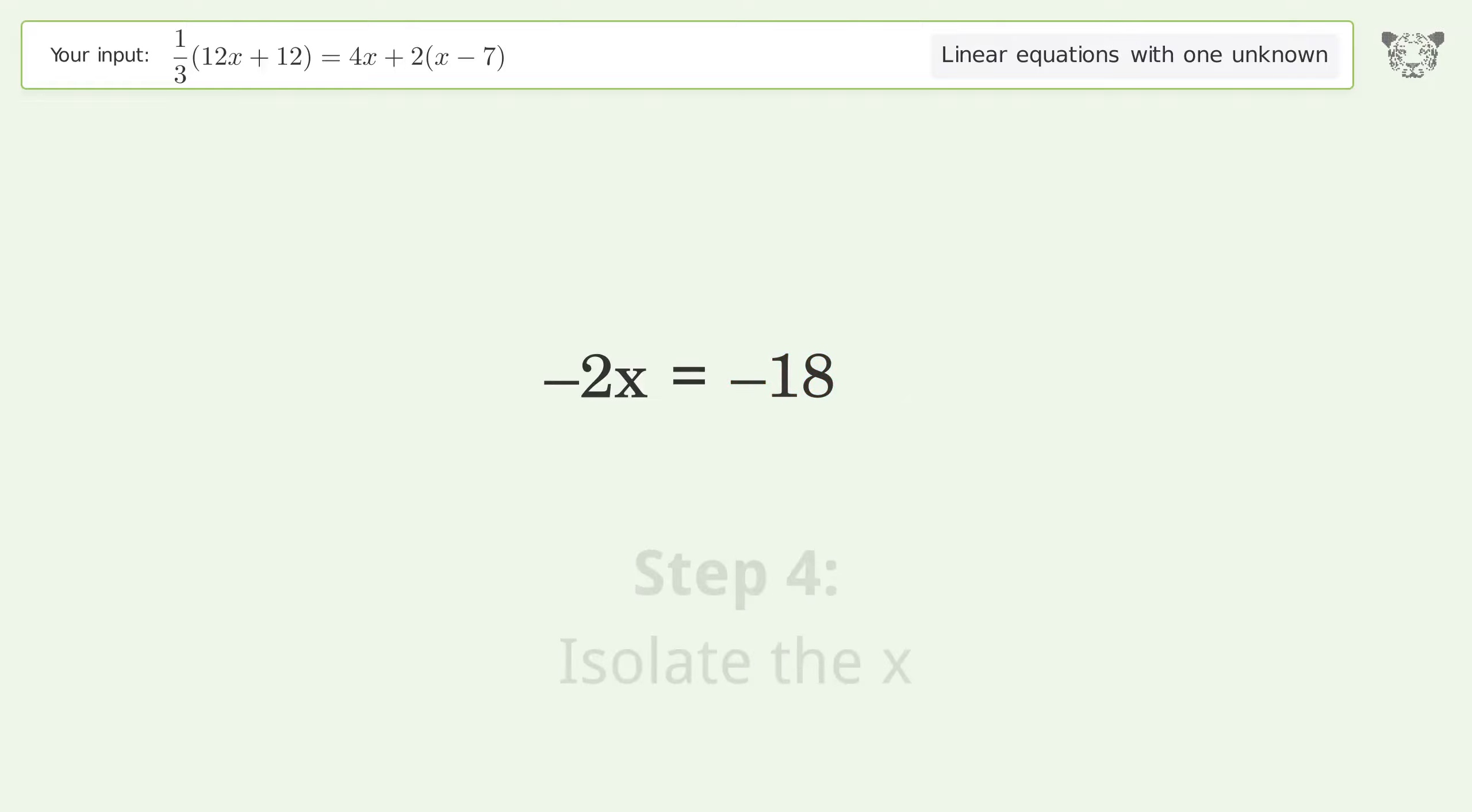Isolate the x. Divide both sides by negative 2. Cancel out the negatives.